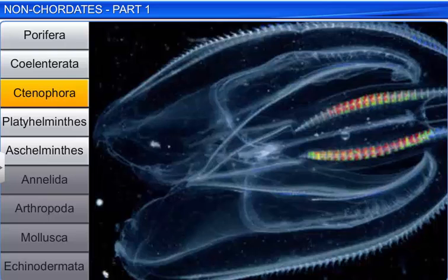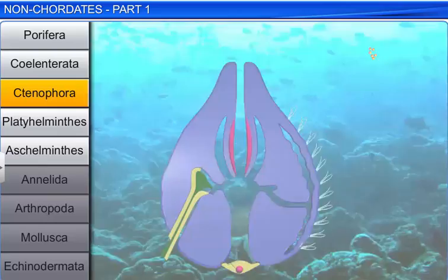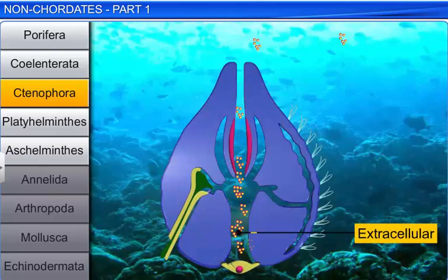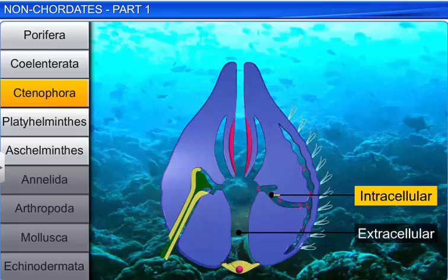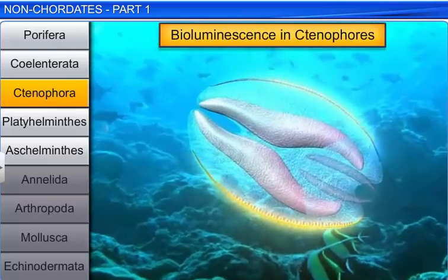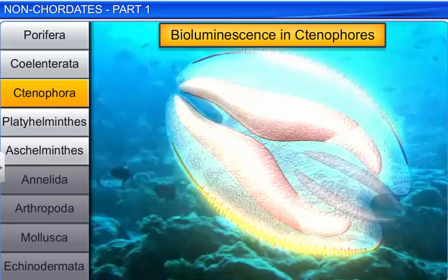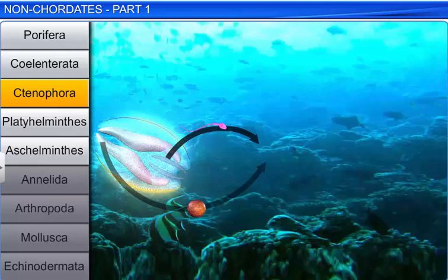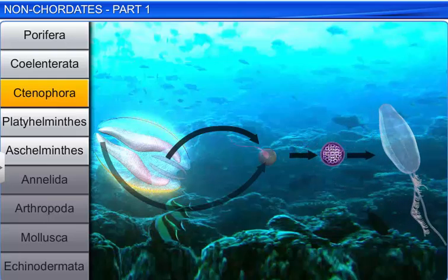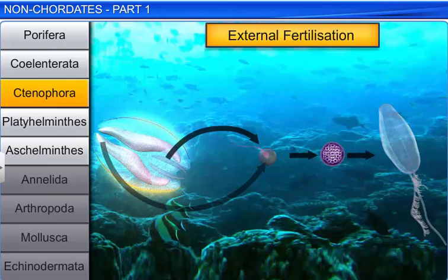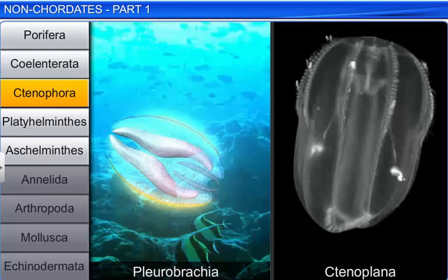They have eight external rows of ciliated comb plates, which help in locomotion. Digestion in these animals is both extracellular and intracellular. A characteristic feature of ctenophores is bioluminescence, or the ability to emit light. Ctenophores are hermaphrodite and exhibit sexual reproduction, with external fertilization and indirect development. Pleurobrachia and Ctenoplana are some common ctenophores.